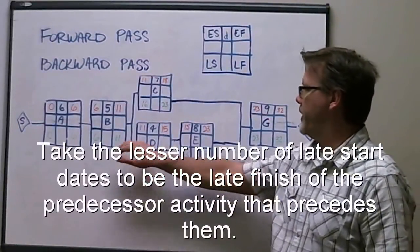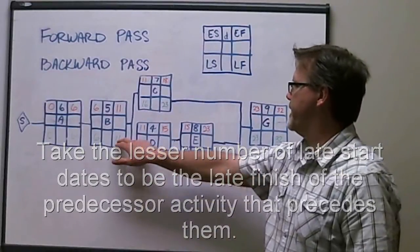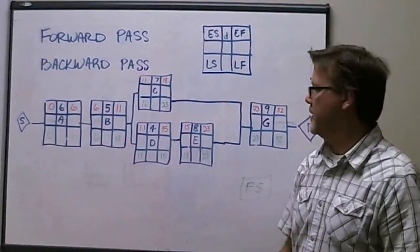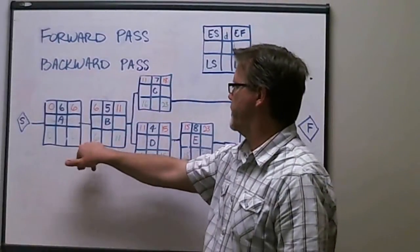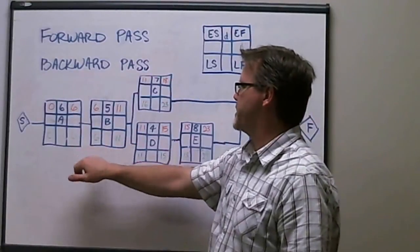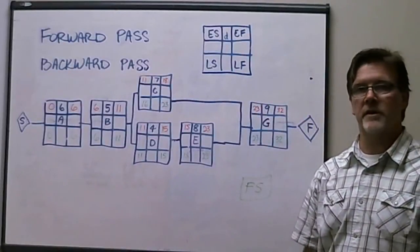Late finish date for activity B is 11, less 5. Late start date for activity B is 6. So on and so forth, we carry it over to the first activity of the project, activity A. Late finish 6, less 6. We get back to our start time of duration of 0.